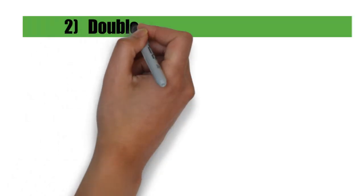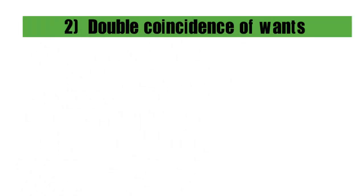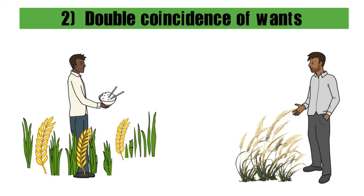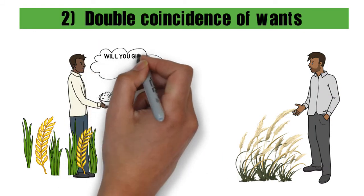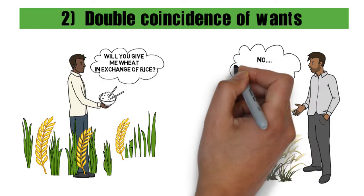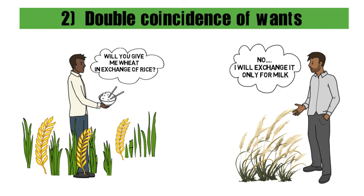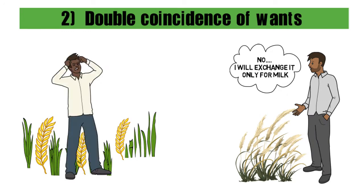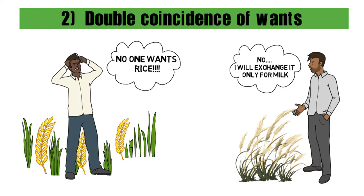Another problem with the barter system was the double coincidence of wants. Say a person produces rice and wants wheat in exchange, but the person producing wheat wants milk in exchange because he doesn't eat rice. In such a situation, person A will never be able to purchase wheat and no trade would exist between them.